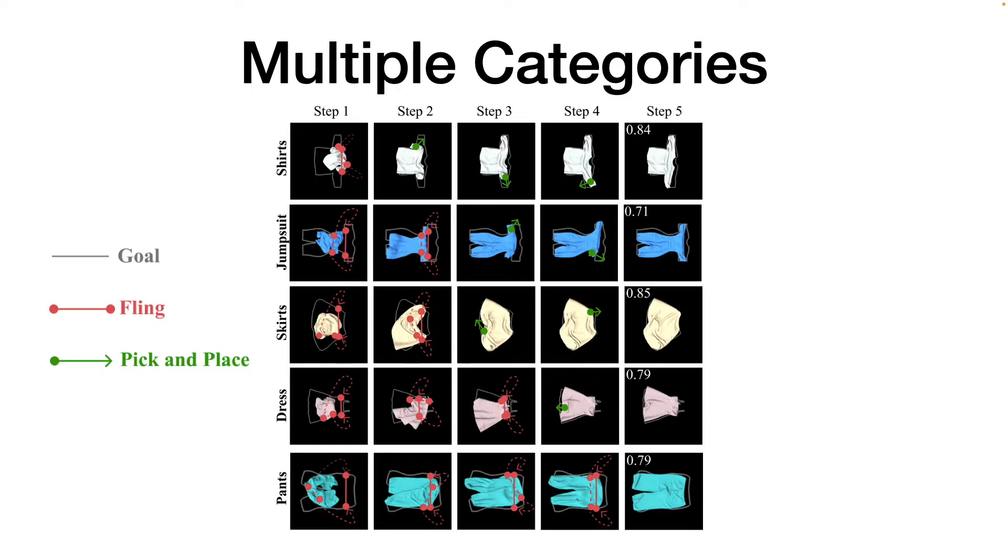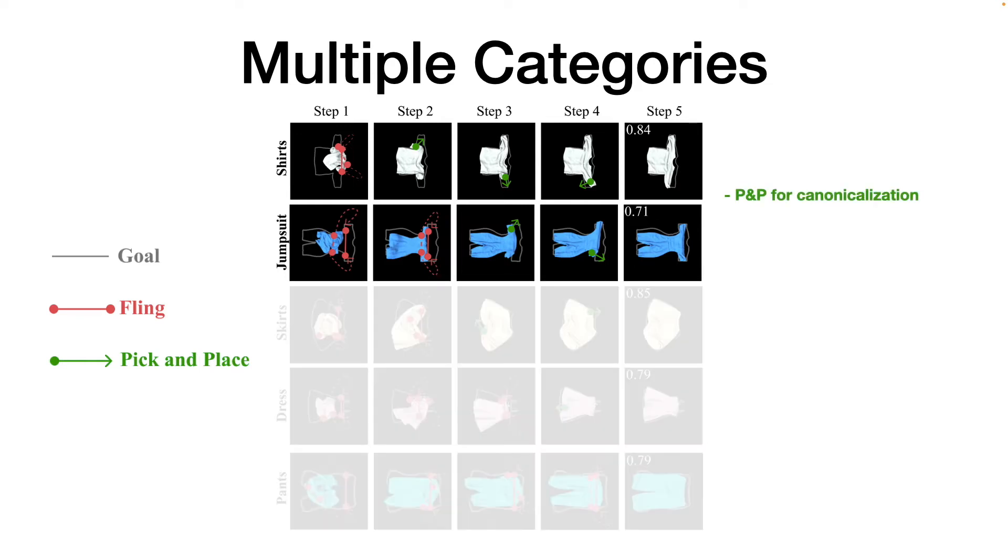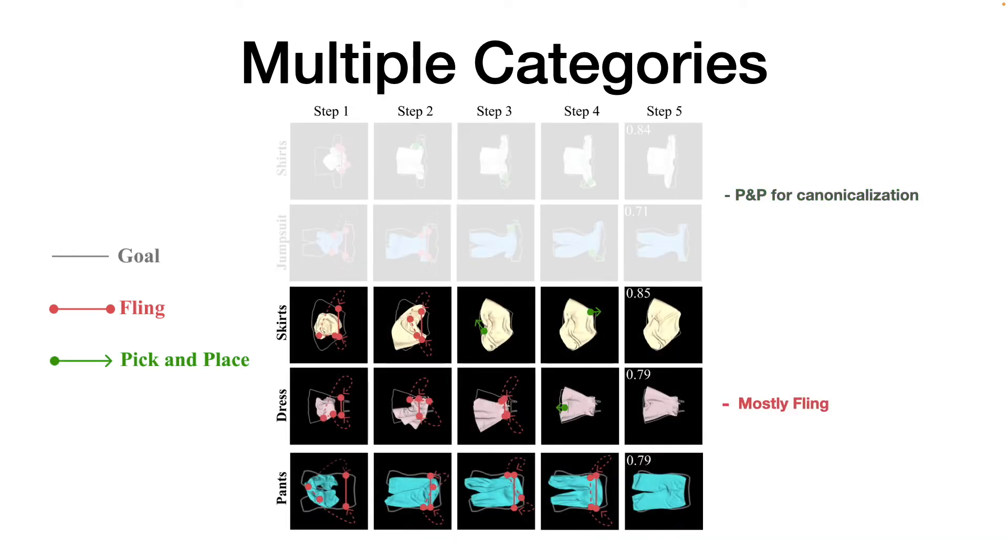Recreating the setup in simulation, we train a model for each category, and we find that each model discovers interesting strategies for its own category. For example, while the shirt and the jumpsuit need pick and place to adjust the arms, skirts, dresses, and pants are mostly canonicalized after a few flings, so pick and place is used a lot less.